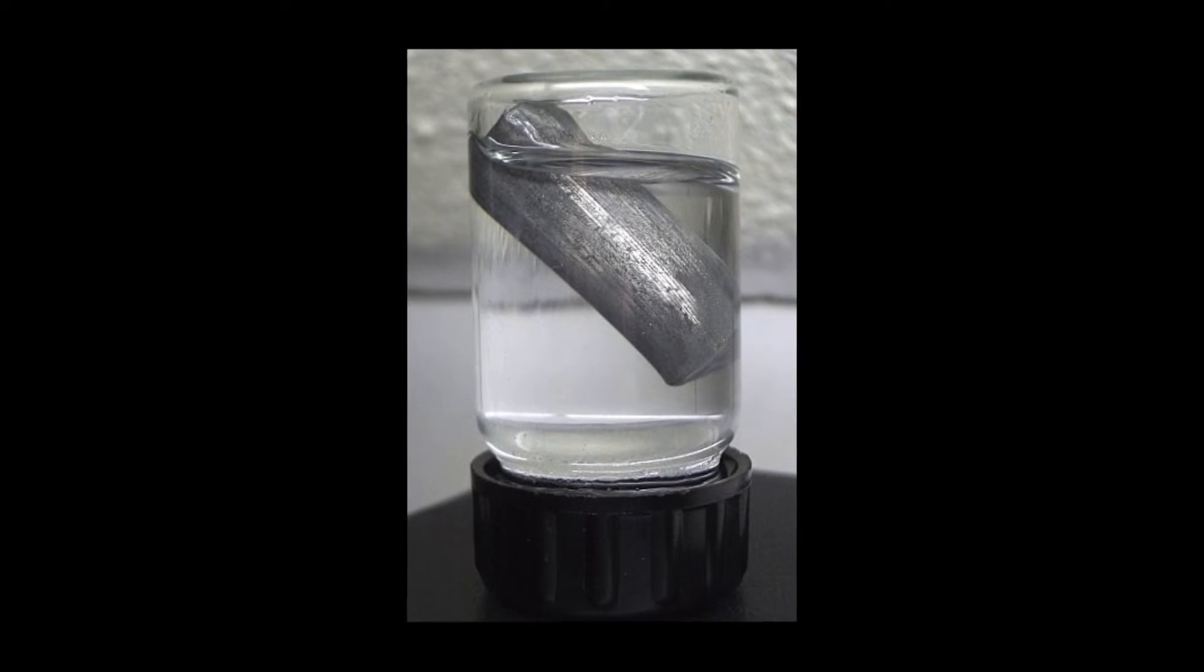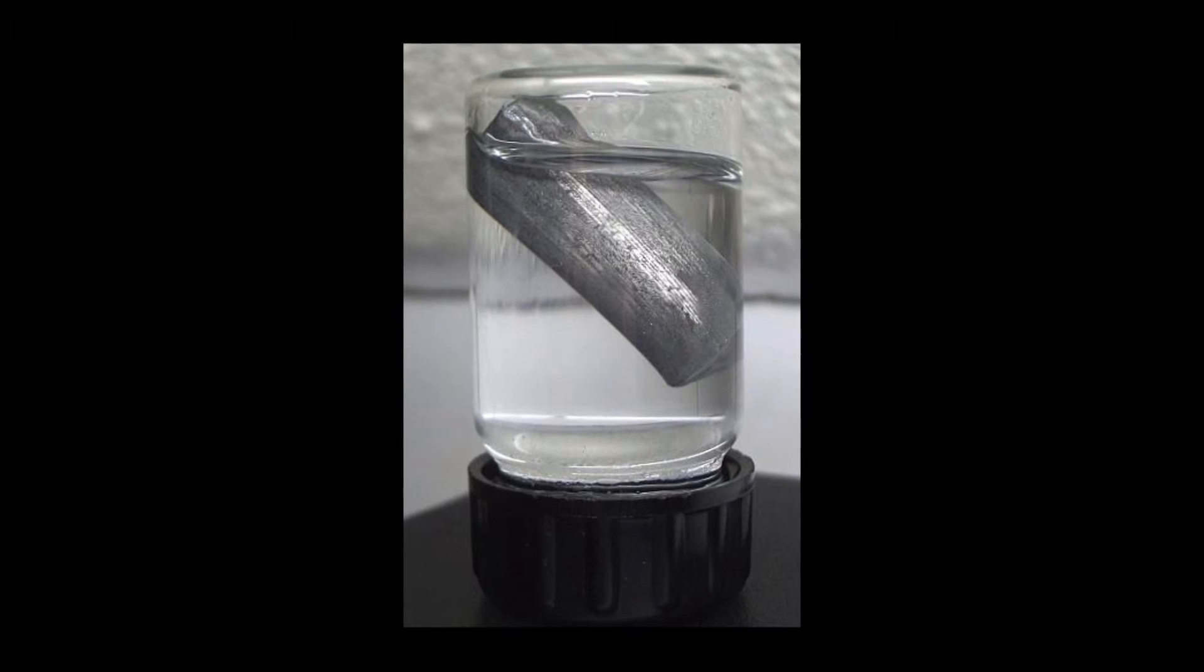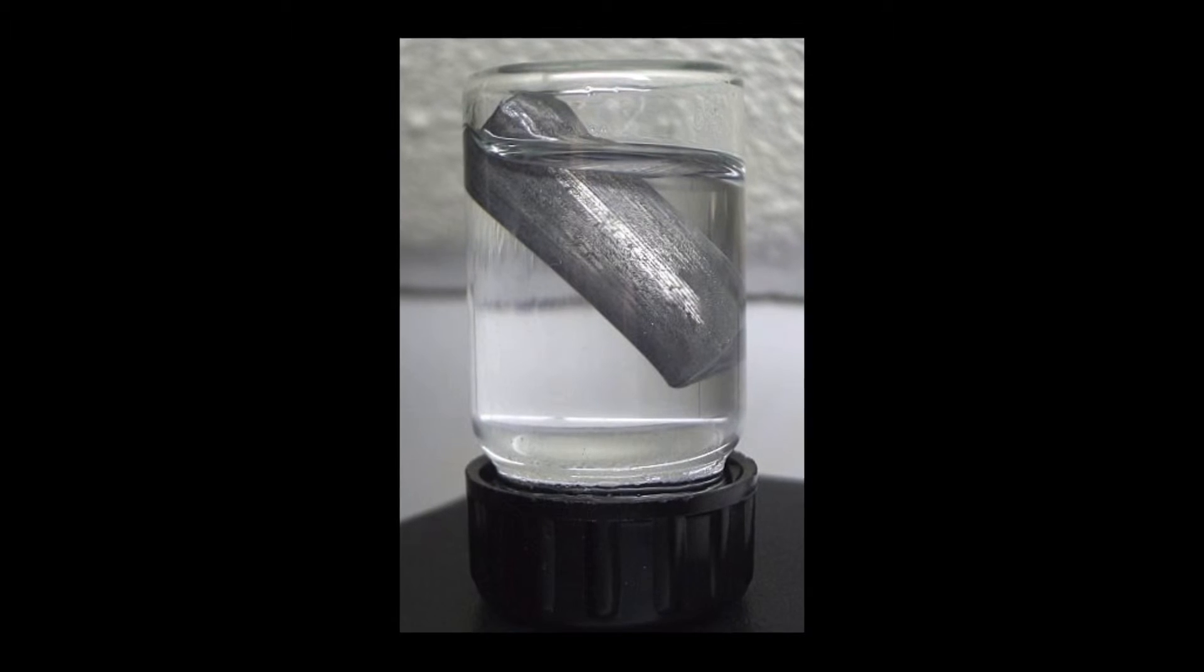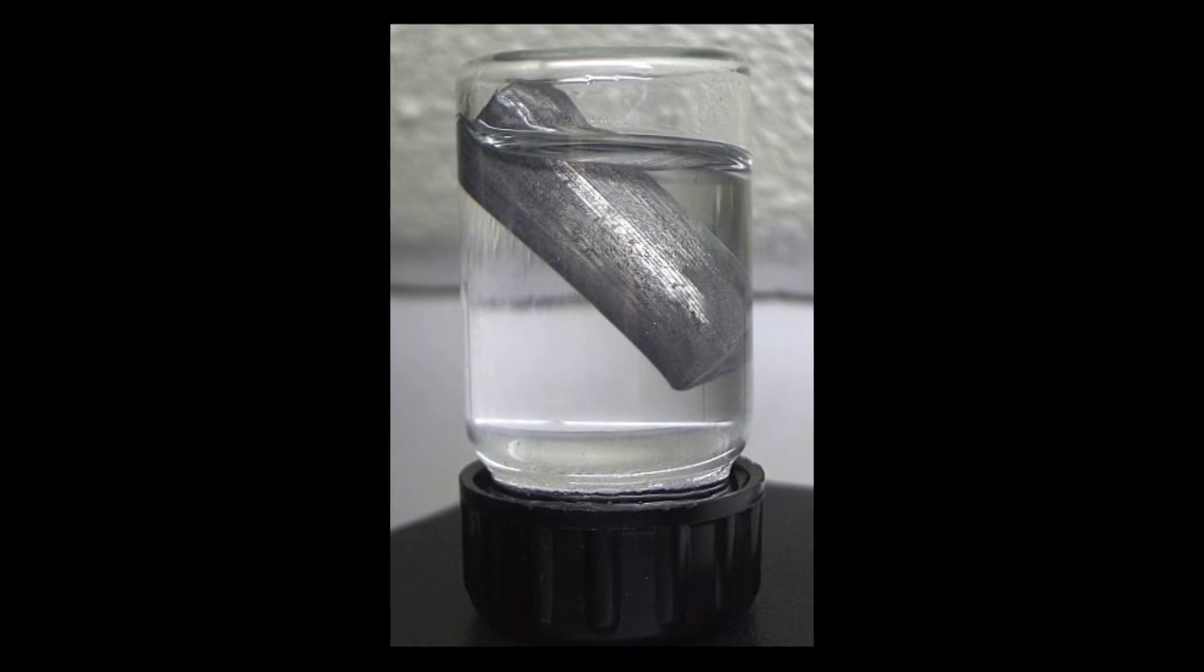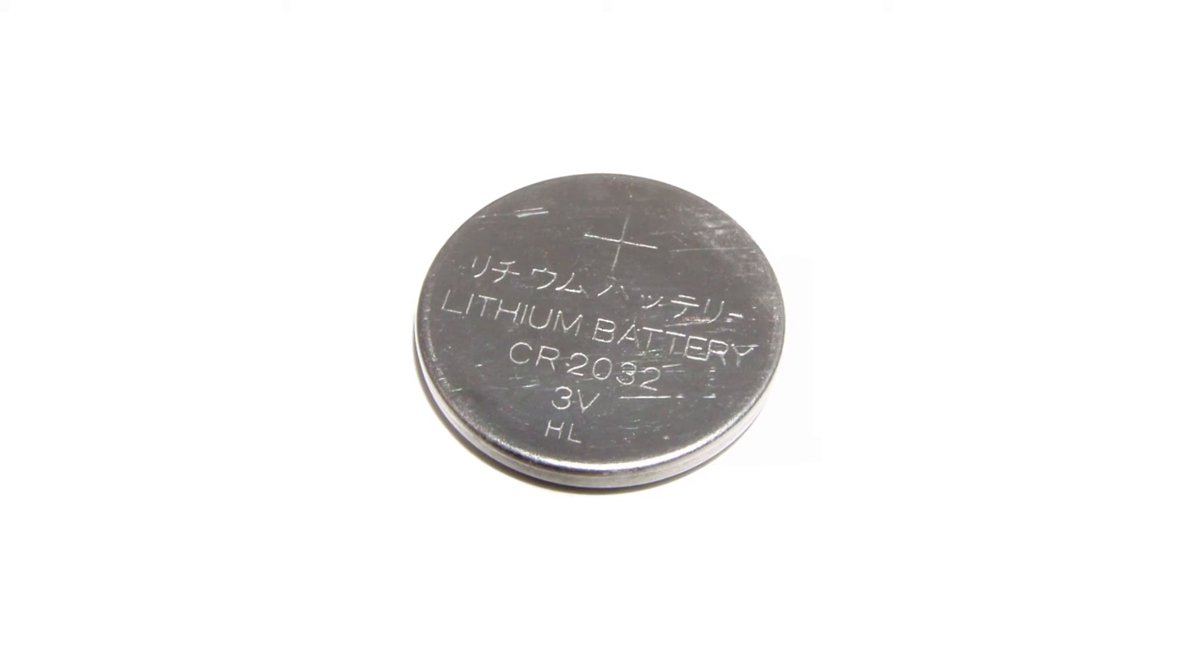Because of its relative nuclear instability, lithium is less common in the solar system than 25 of the first 32 chemical elements, even though the nuclei are very light in atomic weight.